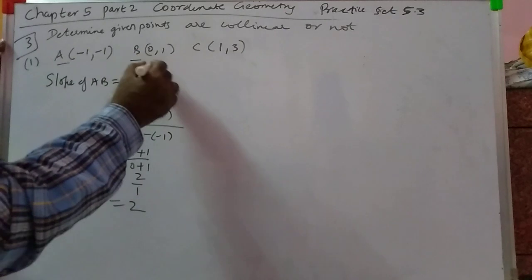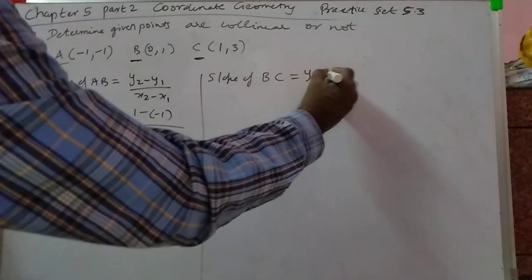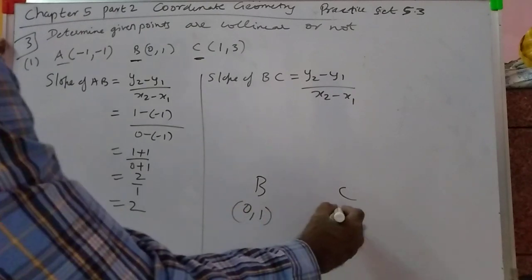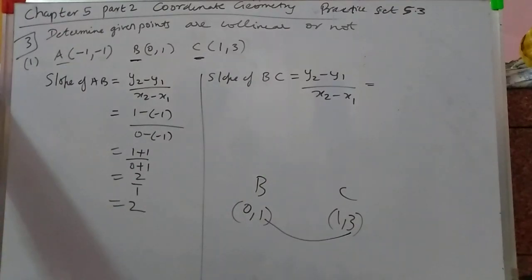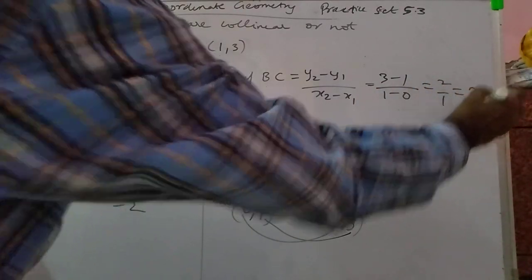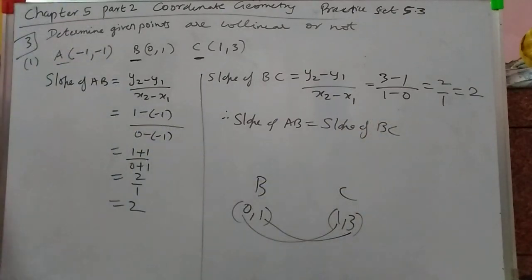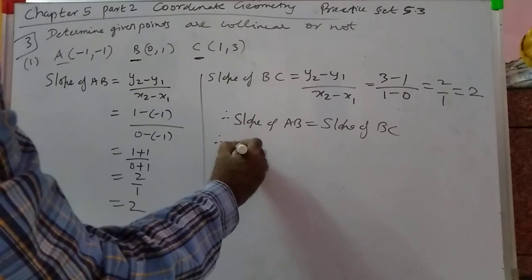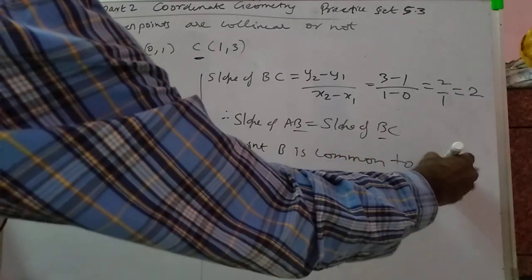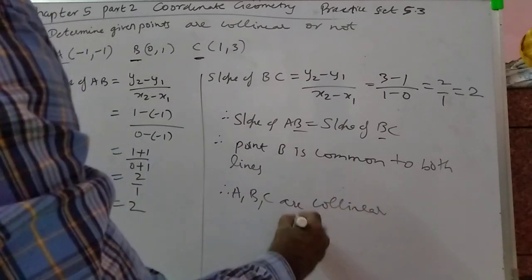Now let us calculate the slope of BC. B is (0, 1) and C is (1, 3). That will become 3 minus 1 over 1 minus 0, which is 2 upon 1, that is 2. Therefore slope of AB is equal to slope of BC. Point B is common to both lines; therefore A, B, C are collinear points.